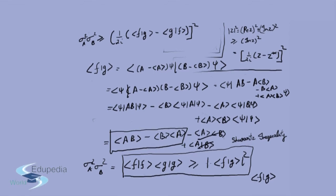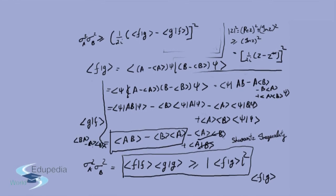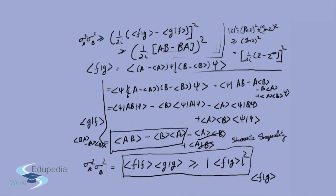Similarly, ⟨G|F⟩ comes out to be ⟨BA⟩ minus ⟨A⟩⟨B⟩. When you subtract ⟨G|F⟩ from ⟨F|G⟩, the ⟨A⟩⟨B⟩ terms cancel and what remains is ⟨AB⟩ minus ⟨BA⟩, which is the commutator of A and B. So the result is: sigma A squared times sigma B squared is greater than or equal to (1 over 2i) times the commutator [A, B], all squared.